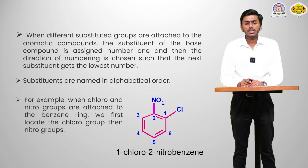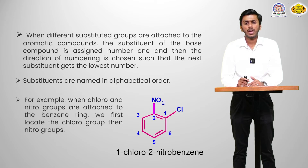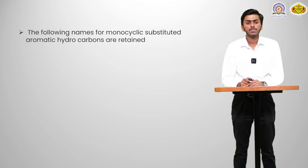Here is the image of 1-chloro-2-nitrobenzene. C comes before N alphabetically, that is why we give the IUPAC nomenclature 1-chloro-2-nitrobenzene to that compound.